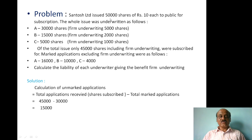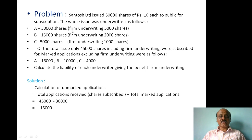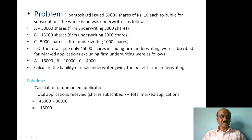Today's problem: Santos Limited issued 50,000 shares of Rs.10 each to the public for subscription. The whole issue was underwritten as follows: A — 30,000 shares, firm underwriting 5,000 shares; B — 15,000 shares, firm underwriting 2,000 shares; C — 5,000 shares, firm underwriting 1,000 shares.